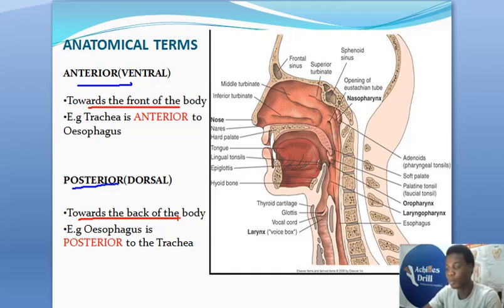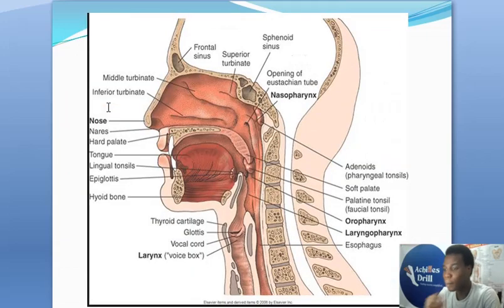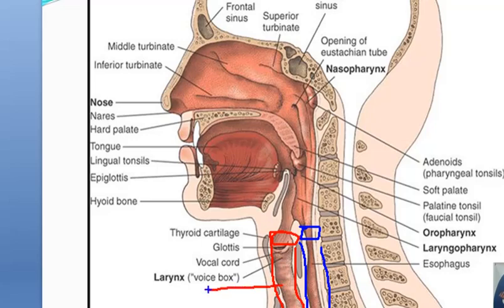Here's an important example: the trachea is anterior to the oesophagus. The human body has these very important tubes — the trachea conducts air towards the lungs, while the oesophagus behind it conducts food to the stomach. These tubes are closely related; one is located in front, which is the trachea, while the oesophagus is located at the back. So the trachea is anterior to the oesophagus — it is in front of the oesophagus — while the oesophagus is posterior to the trachea.